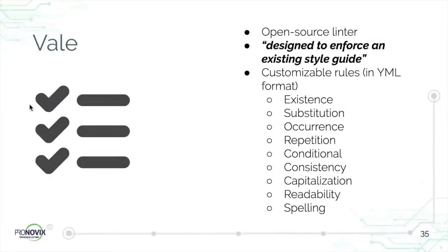Vale is a linter designed to enforce an existing style guide through its YAML-based extension system — a collection of writing guidelines called styles. These guidelines are expressed through rules in YAML format, so you don't have to actually code anything. You can list words or regular expressions for more advanced patterns. Checks detect rule violations in the text. Vale is compatible with many text editors as a resident extension working in real time, but can also be used as a command line tool.